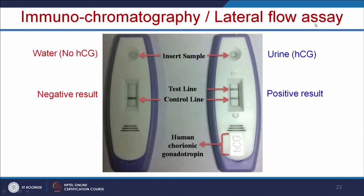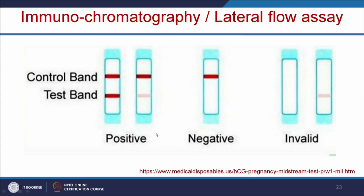Let us see a simple experiment to understand the lateral flow assay using a pregnancy test kit. We will use the urine sample of a pregnant woman, which contains HCG — human chorionic gonadotropin. When you add the sample, you will get two lines, indicating a positive result. In the other kit, we will add simple water with no antigen, and you will get line formation only in the control line. For a positive sample, you have two bands — control band and test band. For a negative sample, you get the band only in the control line. If there is no line, the test is invalid.